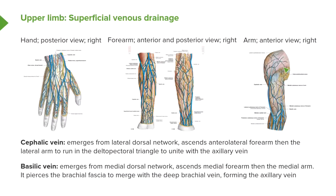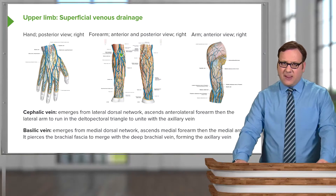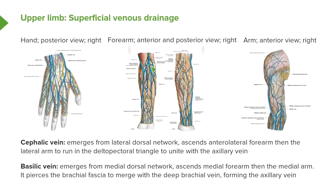The axillary vein runs up in the axilla where it receives the cephalic vein, and then becomes the subclavian vein, which passes blood back to the heart. At the elbow joint, there is a very important communication between the cephalic and basilic veins lying directly anterior to the elbow, known as the median cubital vein. This runs across connecting the cephalic and basilic veins and is an important location for venipuncture when blood is to be removed from the venous system.